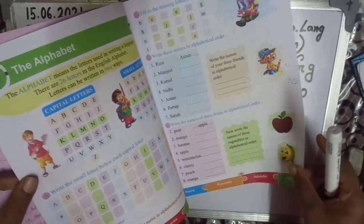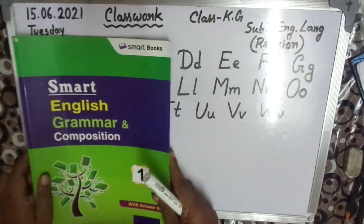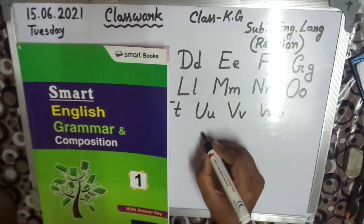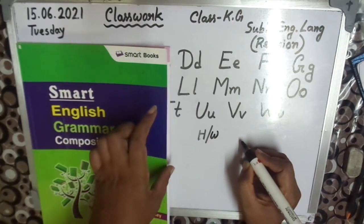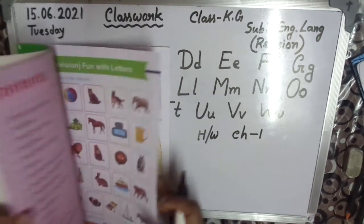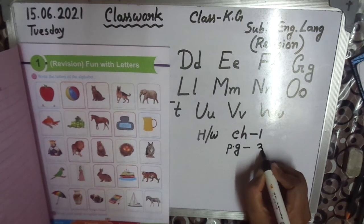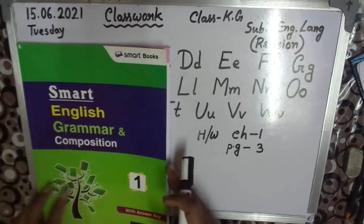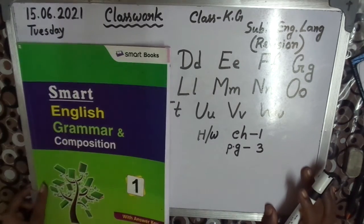Children, take out your school diary. Homework — Chapter 1, Page 1 to Page 3. Letters — capital and small letters. And write your name in capital letters. Okay, pack this.